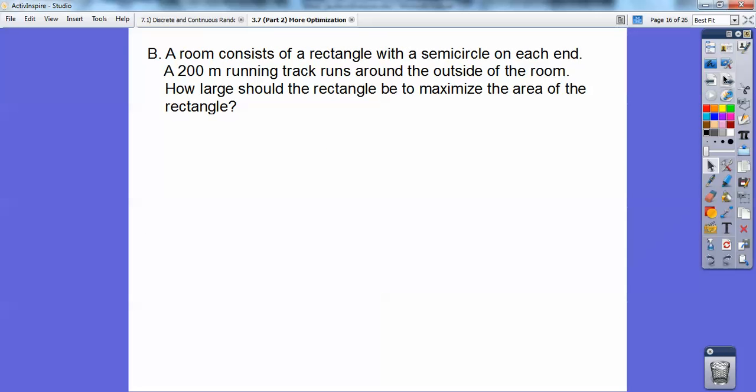Here's another one, number 22 in your textbook. A room consists of a rectangle with semicircles on each end. A 200-meter track runs around the outside of the room. How large should the rectangle be to maximize the area of the rectangle? Here's my picture: a rectangular room with two semicircles on each end.